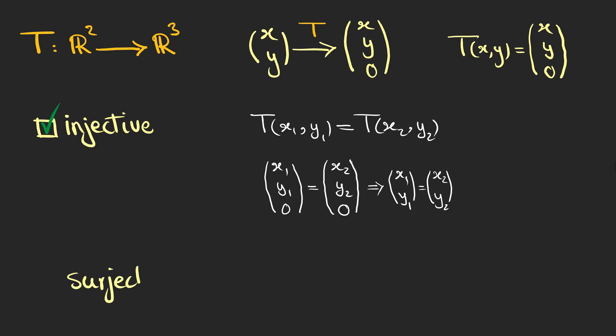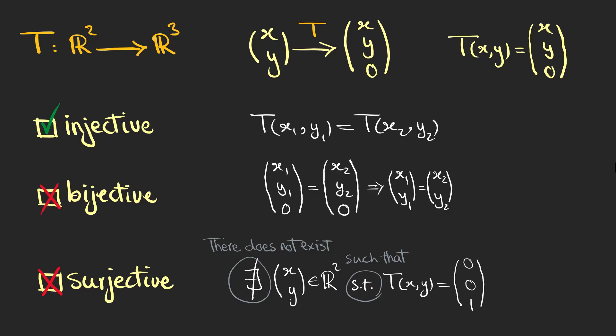What about surjectivity? As an example, you can simply verify that there doesn't exist a vector in our 2D vector space such that its mapping gives this specific vector in the 3D vector space. So this is a sad and lonely person without any friends in our 3D vector space, but it's not his or her fault—it's because of the rules. So this transformation is not surjective and of course not bijective, which needs both injectivity and surjectivity.